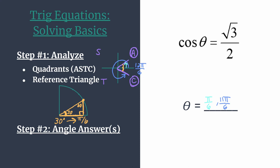Substitute it back to double-check: cosine of 11 pi over 6 is positive root 3 over 2. So these are our two solutions if you're asked to solve on the interval 0 to 2 pi, or for angles on the unit circle. Another way you may be asked is to solve for all solutions, which means we'll slightly modify our answers into two solution equations.